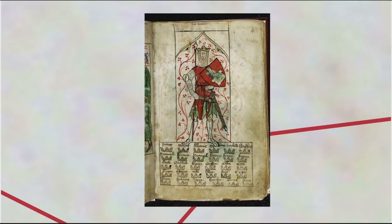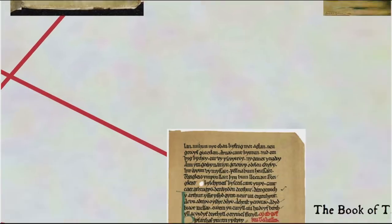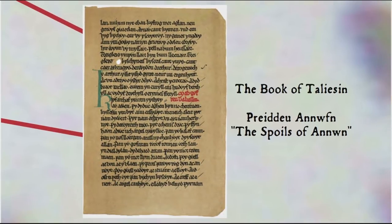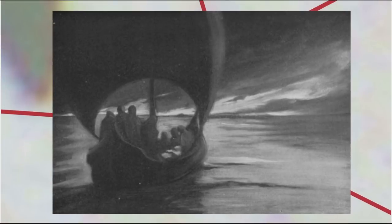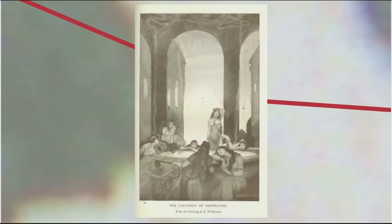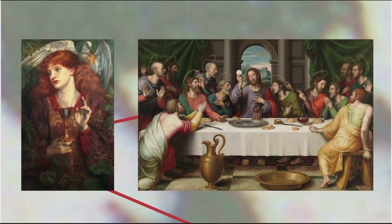Though many poems have been ascribed to Taliesin, modern scholars have identified at least some poetry that seems to date to around the right time to have been written by the historical Taliesin, including some of the material in the Middle Welsh manuscript known as the Book of Taliesin. One of the poems in the Book of Taliesin, called Preiddeu Annwfn — 'The Spoils of Annwn' — tells of Arthur's dangerous journey to Annwn, the otherworld in Welsh mythology, and the acquisition of a magical cauldron, which some have argued may be one of the sources of the legend of the Holy Grail, having become conflated with Christian elements such as the Holy Chalice Jesus was said to have used at the Last Supper.